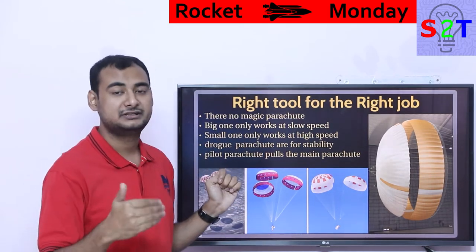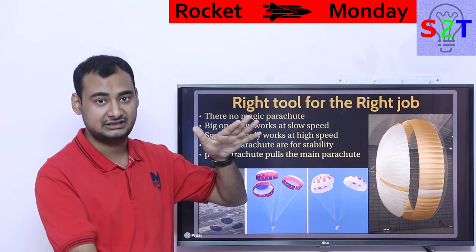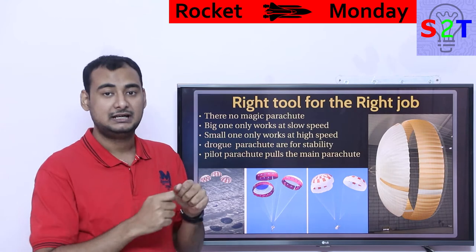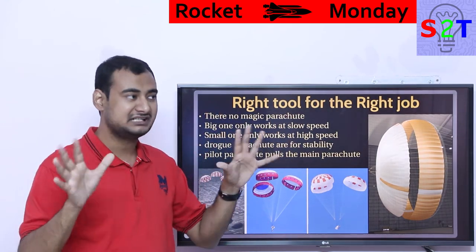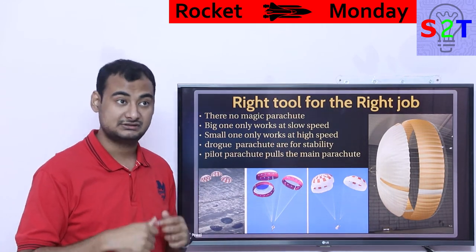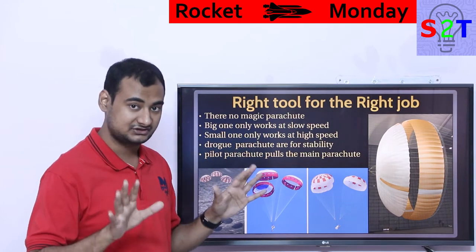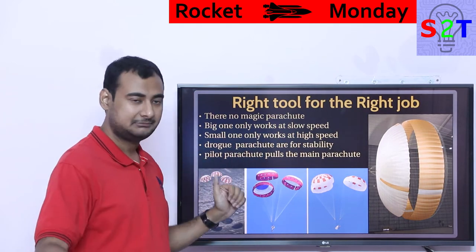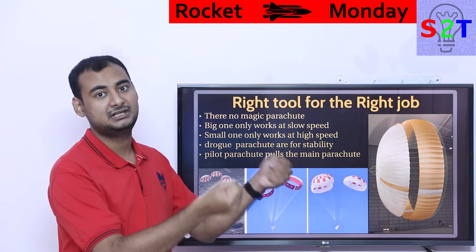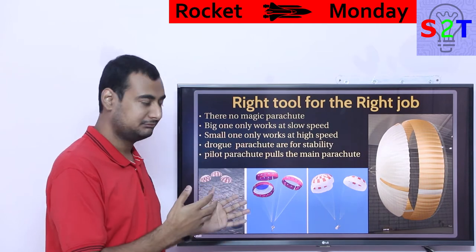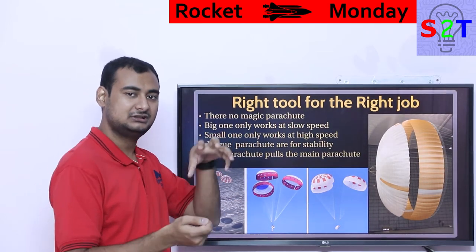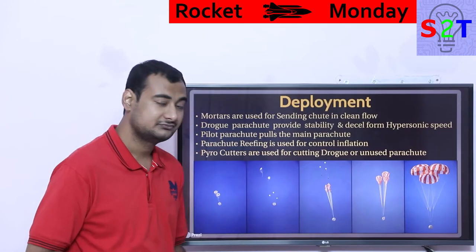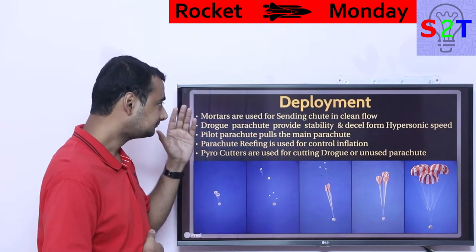Parachutes are classified in three main categories. The main parachute takes you from 500 km/h to safe landing. Drogue chutes are deployed as early as possible — they stop tumbling and provide directional stability; they are fancy stabilizers, generally made of Kevlar because they endure a lot of heating. Then you have pilot parachutes, whose main job is to smoothly pull out the big main parachutes.